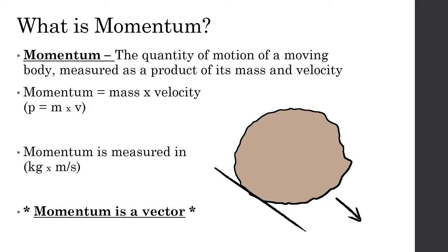So what is momentum? Momentum is the quantity of motion of a moving body, measured as a product of its mass and velocity — momentum equals mass times velocity. I like to show this picture of a rolling snowball because as it's rolling, it gets more and more snow on top, meaning the mass is increasing. And as it rolls, it gets faster and faster, meaning the velocity is increasing — so more and more momentum as it goes.